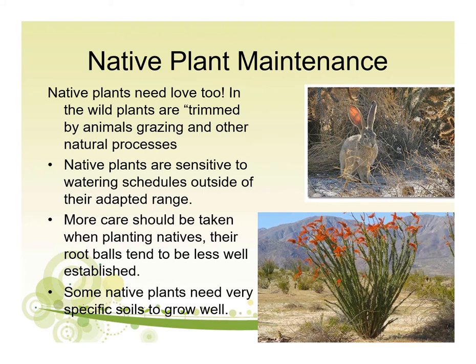Native plants need maintenance too. Out in nature, they are trimmed by animals grazing. They are sensitive to watering schedules outside of their adaptive range — for some very low water-use natives not accustomed to summer water, if you start watering them in summer they can get diseased or die. Some are called garden-friendly and can tolerate a little summer water. Do your research when planting with natives and manage their water regime in a way that will help their longevity.